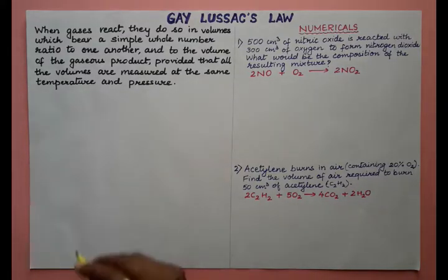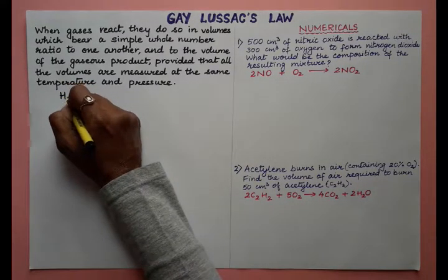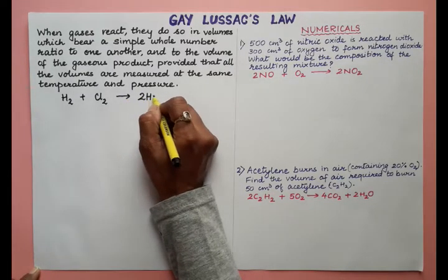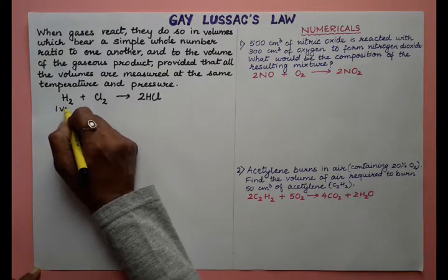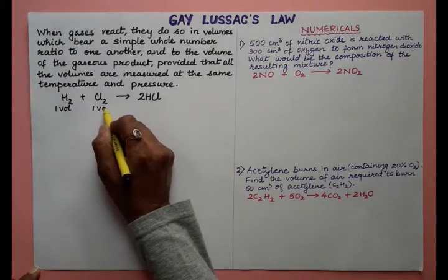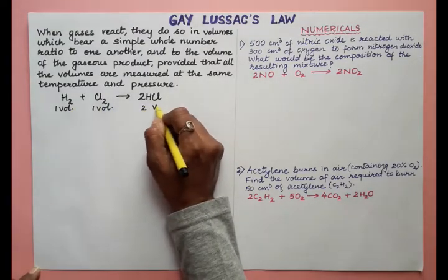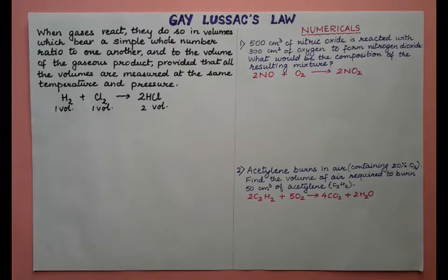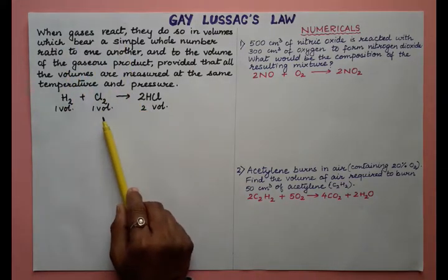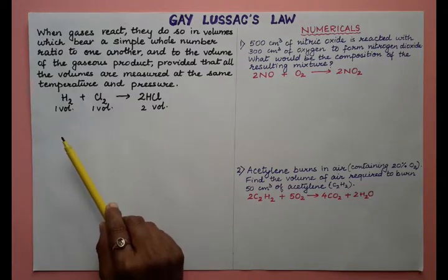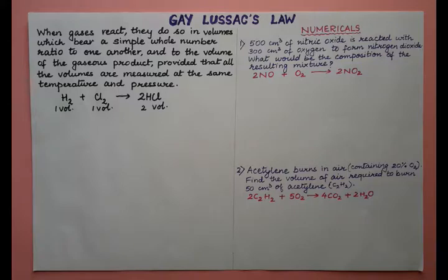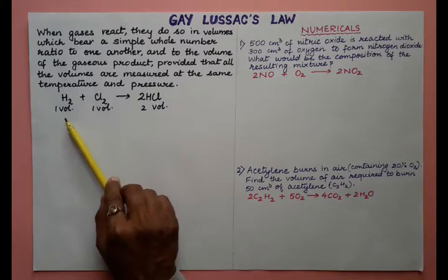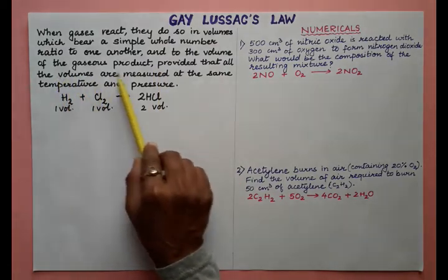Let us take the first example to understand the law. Hydrogen reacts with chlorine to give hydrogen chloride. Here, one volume of hydrogen reacts with one volume of chlorine, and we get two volumes of hydrogen chloride gas. This law applies only to gases. The volumes can be measured in units such as litres, millilitres, centimetre cube, or decimetre cube, as long as they bear a simple whole number ratio — here the ratio is 1:1:2.